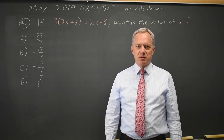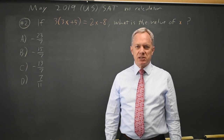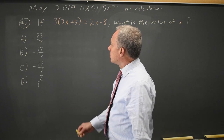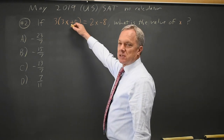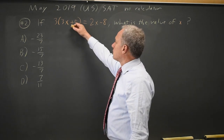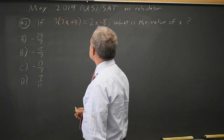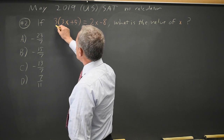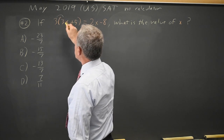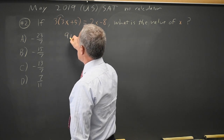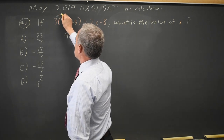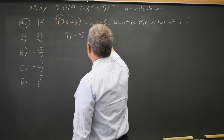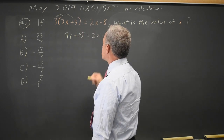This is question 2 from the May 2019 U.S. exam. College Board gives us a linear equation and asks us to solve for x. I'm going to distribute: 3 times 3x is 9x, 3 times 5 is 15, equals 2x minus 8.